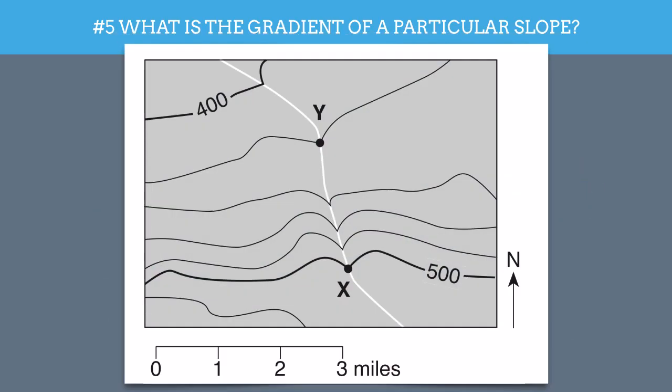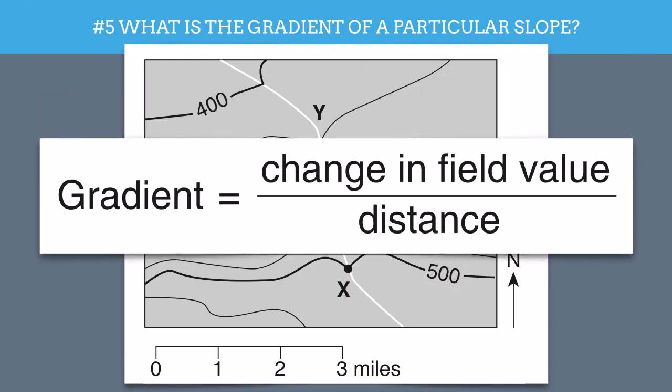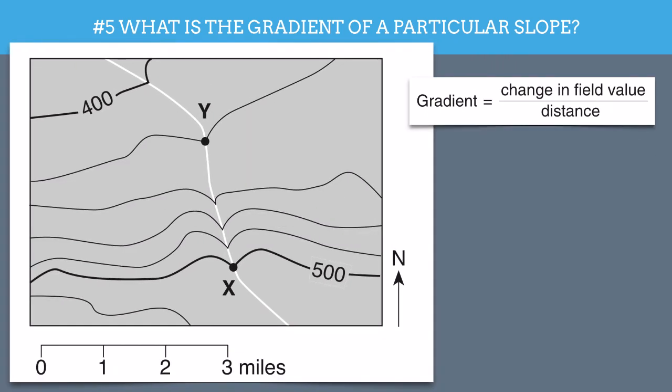So let's look at another map here. And in order to calculate gradient, we need a formula. The formula is change in field value divided by distance. This can be found in the earth science reference tables.